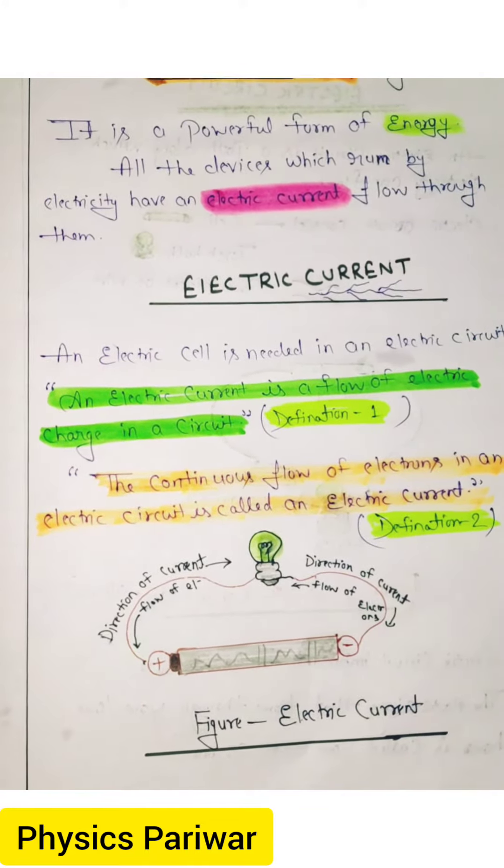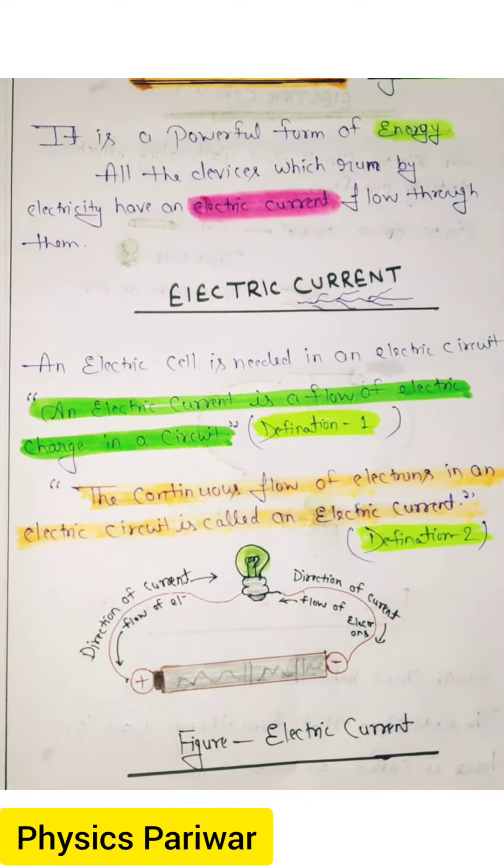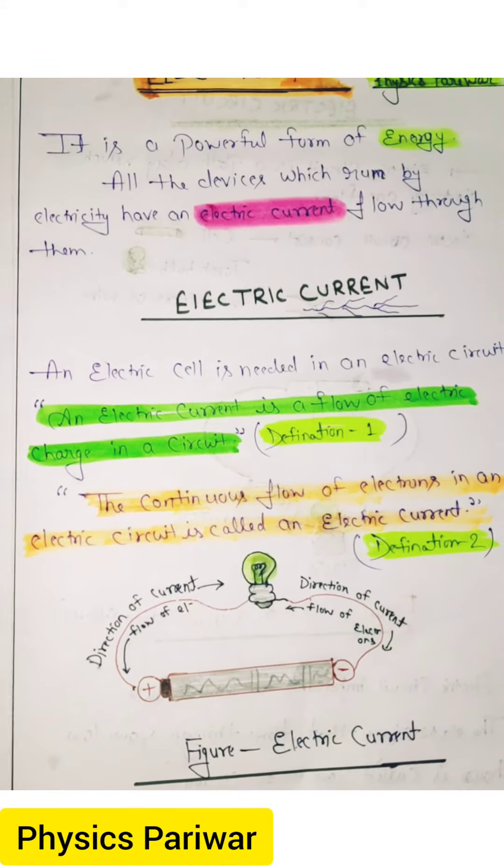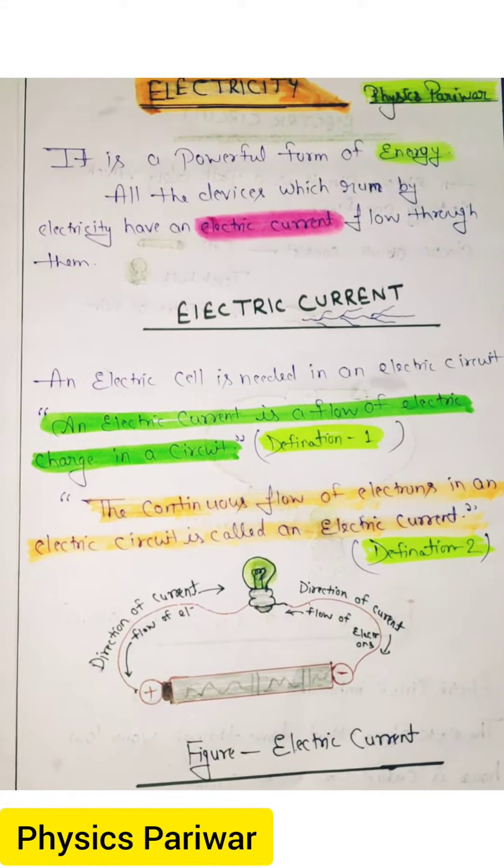Electricity is basically a powerful form of energy. All the devices which run by electricity have an electric current flow through them.